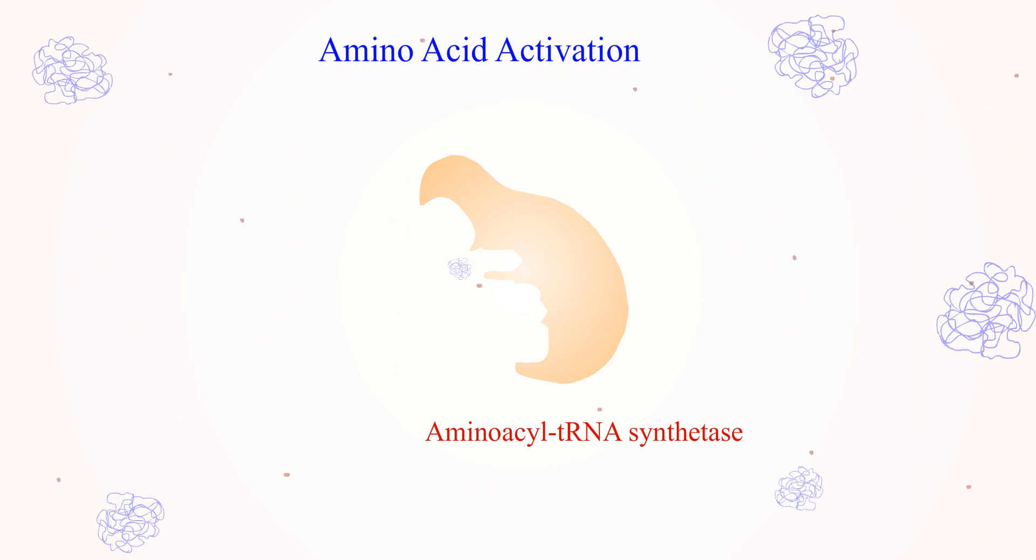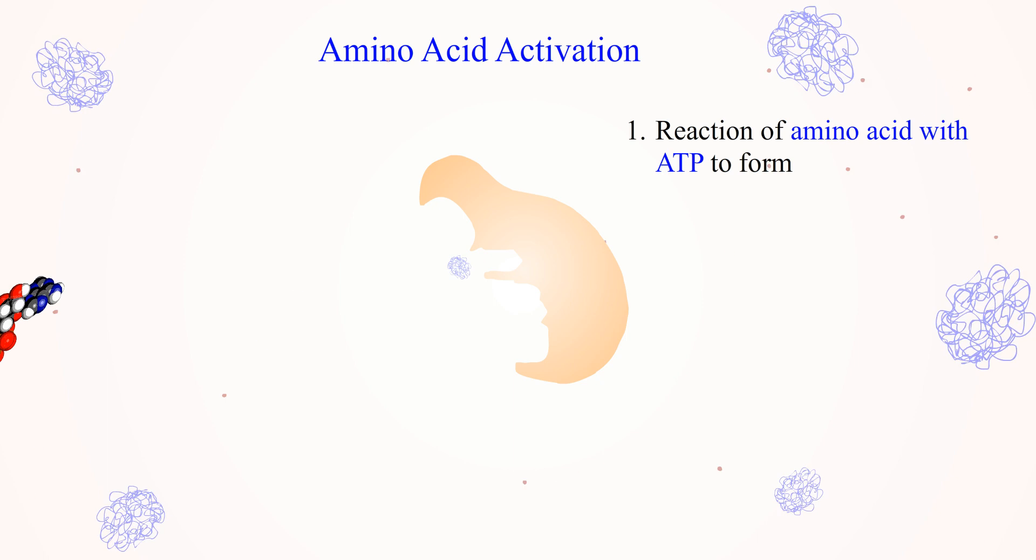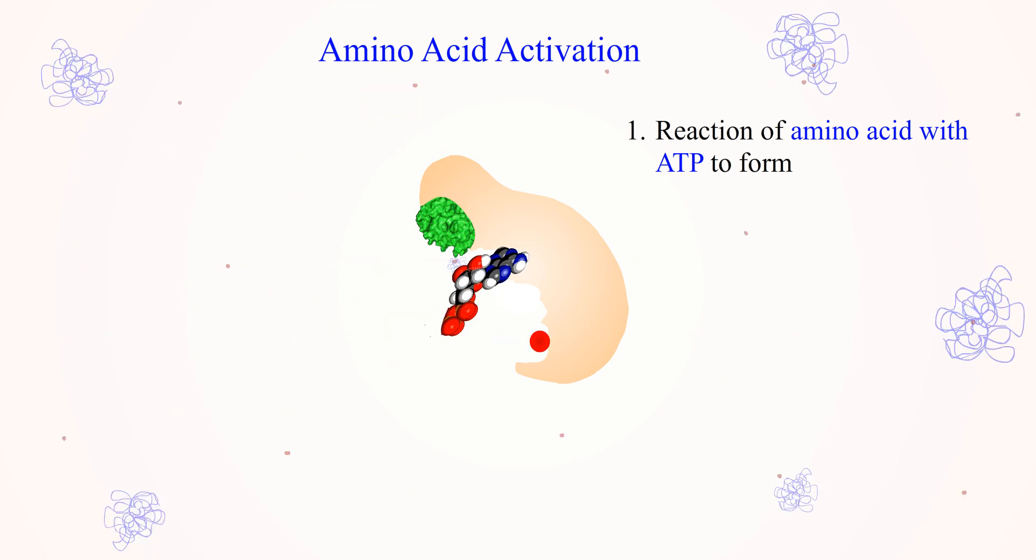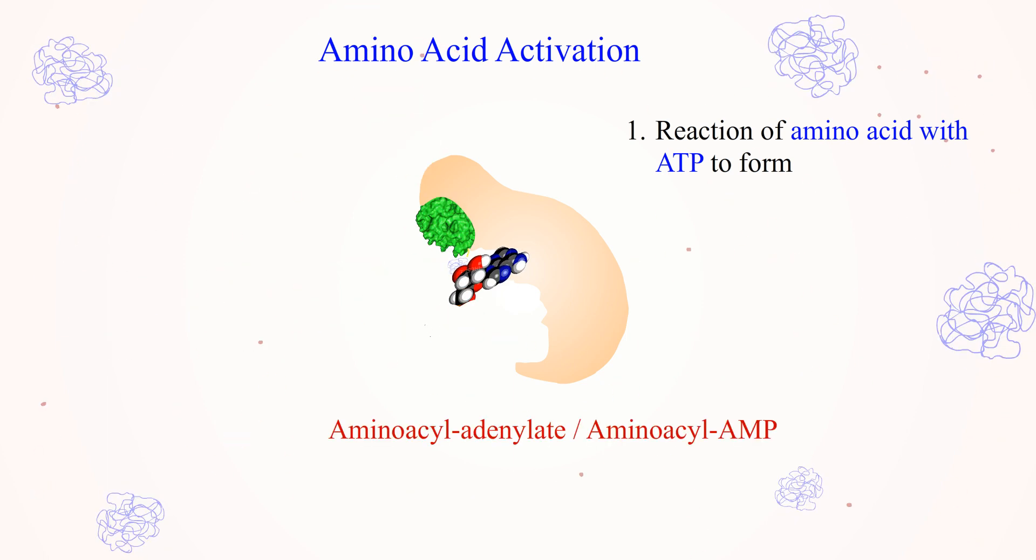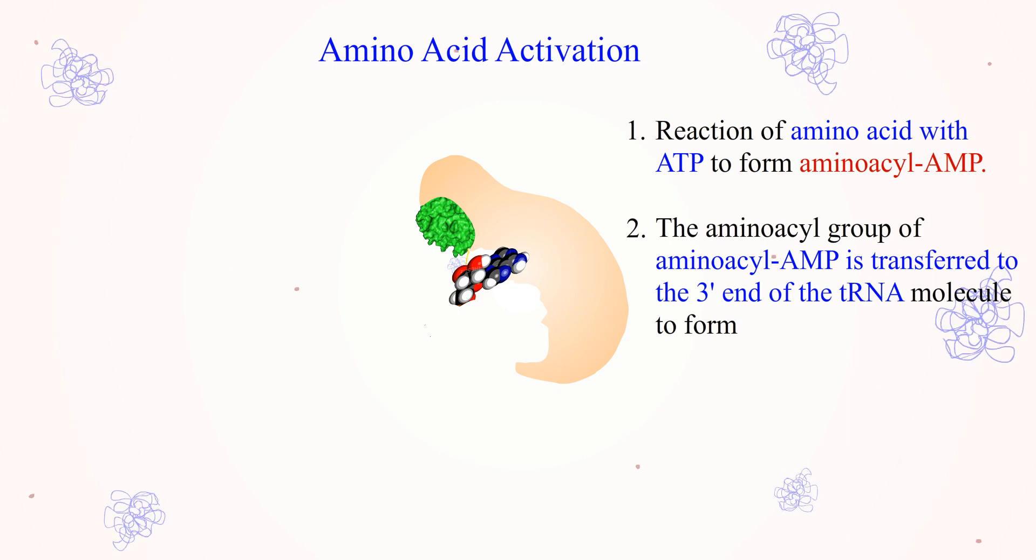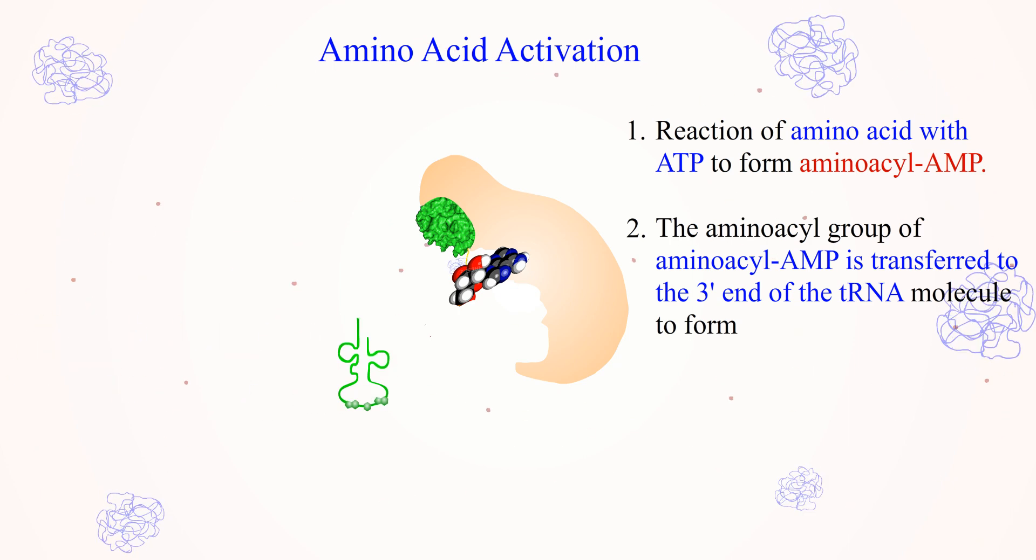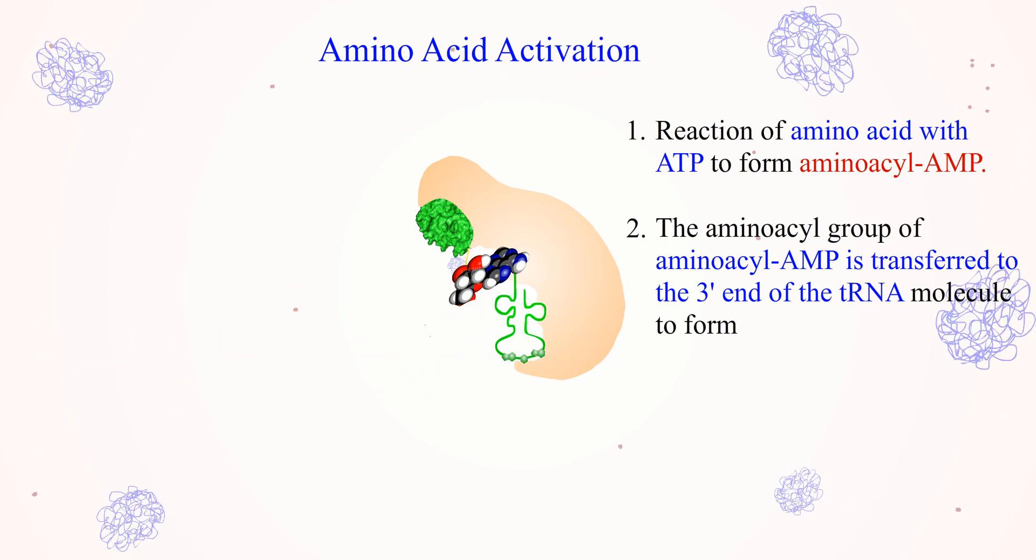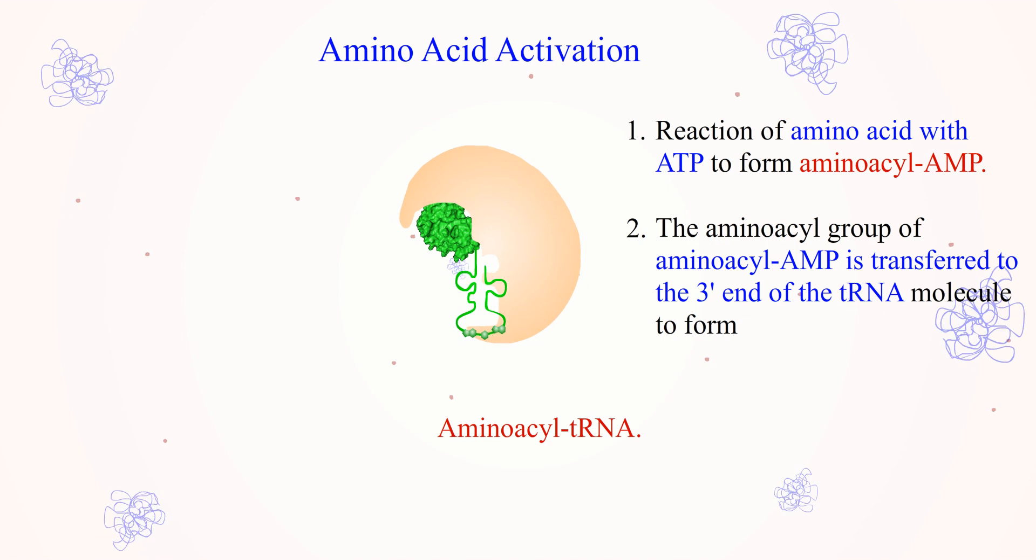Aminoacyl activation occurs in two steps. In the first step, the amino acid reacts with ATP to form aminoacyl adenylate or aminoacyl AMP. In the second step, the aminoacyl group of aminoacyl AMP is transferred to the 3' end of the tRNA molecule to form aminoacyl tRNA.